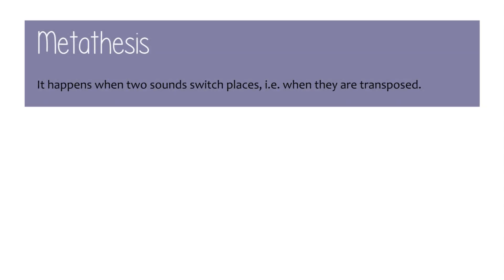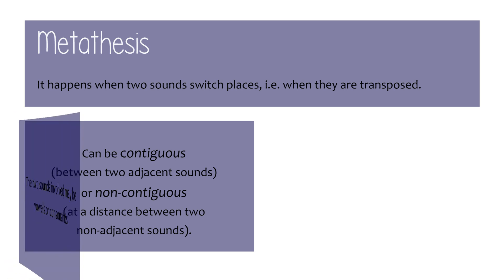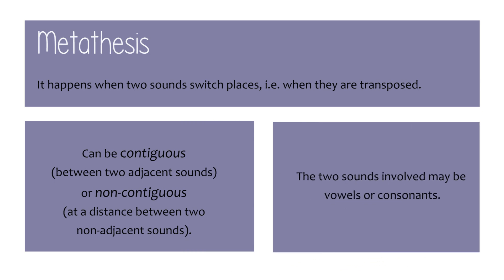Metathesis happens when two sounds switch places — that is, when they are transposed. Interestingly, metathesis can be contiguous, occurring between two adjacent sounds, but it may also occur non-contiguously, between two non-adjacent sounds. The two sounds involved may be vowels or consonants. We already saw an English example.